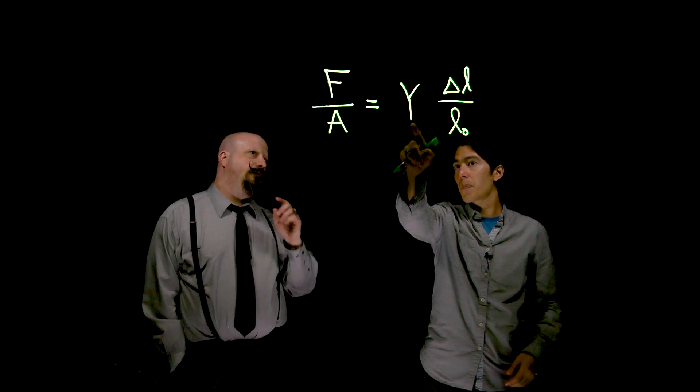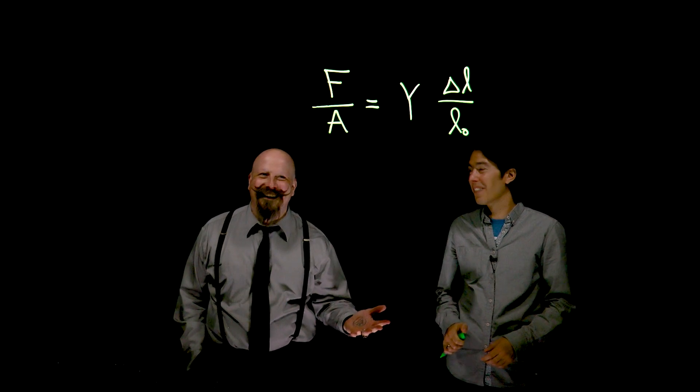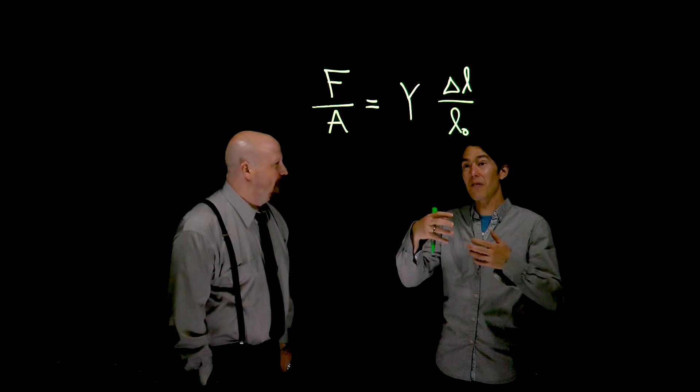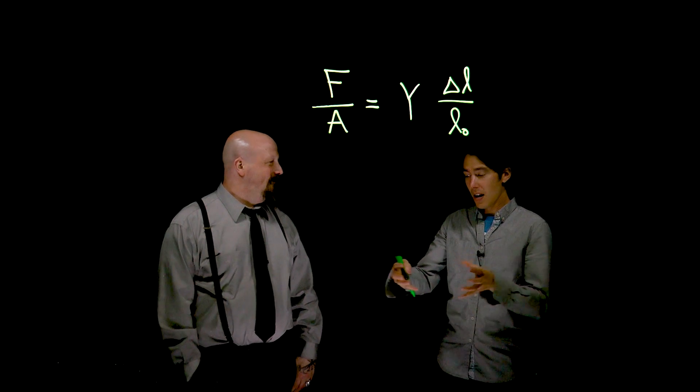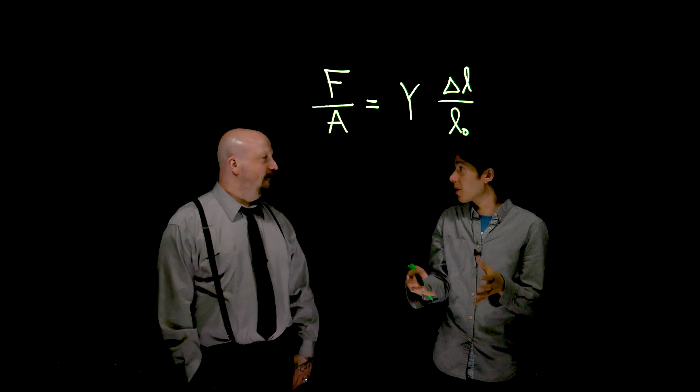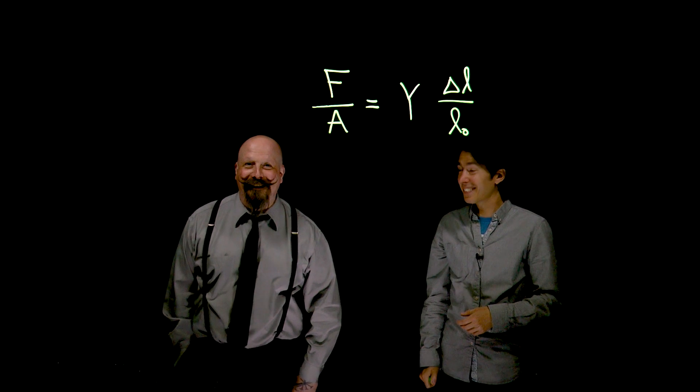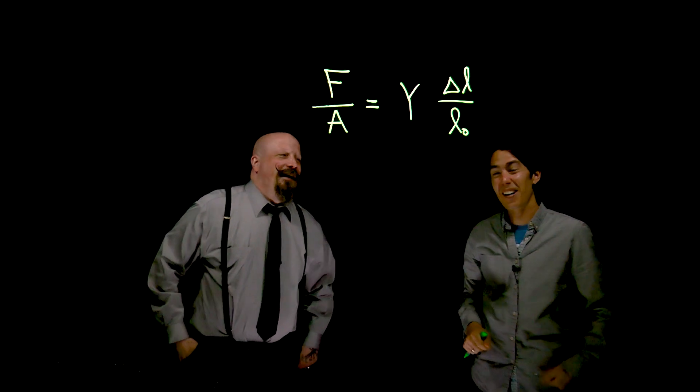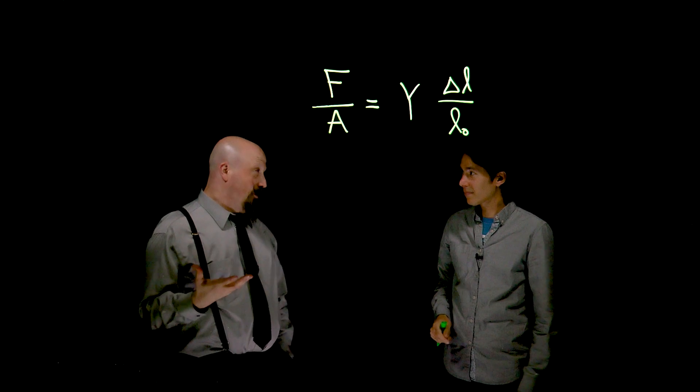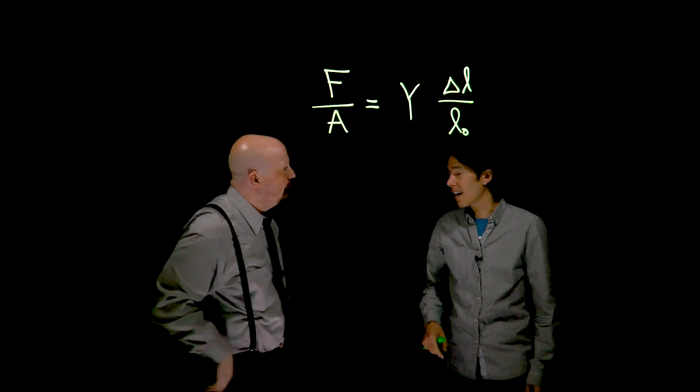And then this last bit is called the Young's modulus. Why? I get you. That's the material property. That's just how stiff a material is. Whether it's rubbery, like rubber, and has a low Young's modulus or something that's stiffer. Why? It'll have a higher Young's modulus. So it's literally a numerical index. Yeah. The bigger that value, the harder it is to change this initial length.